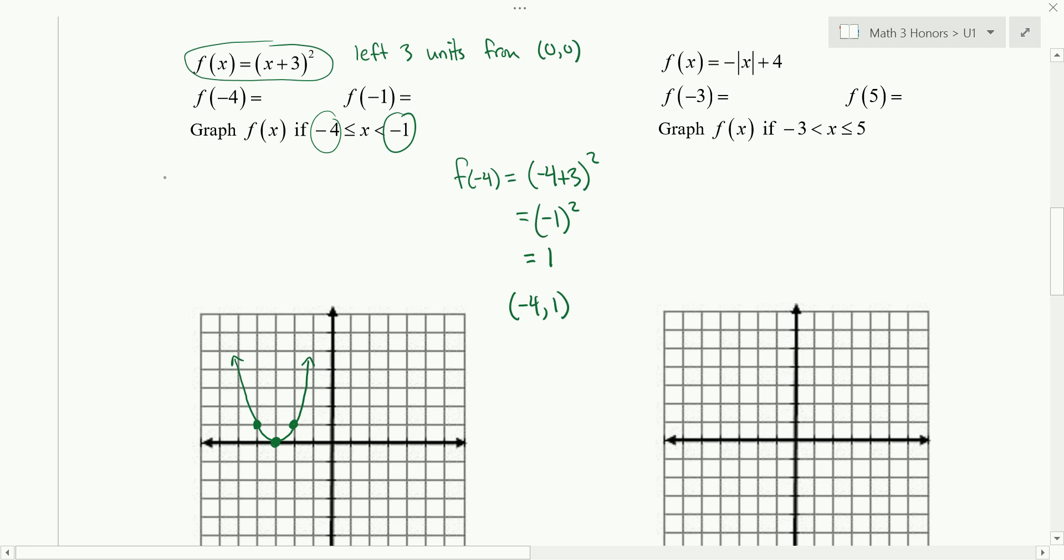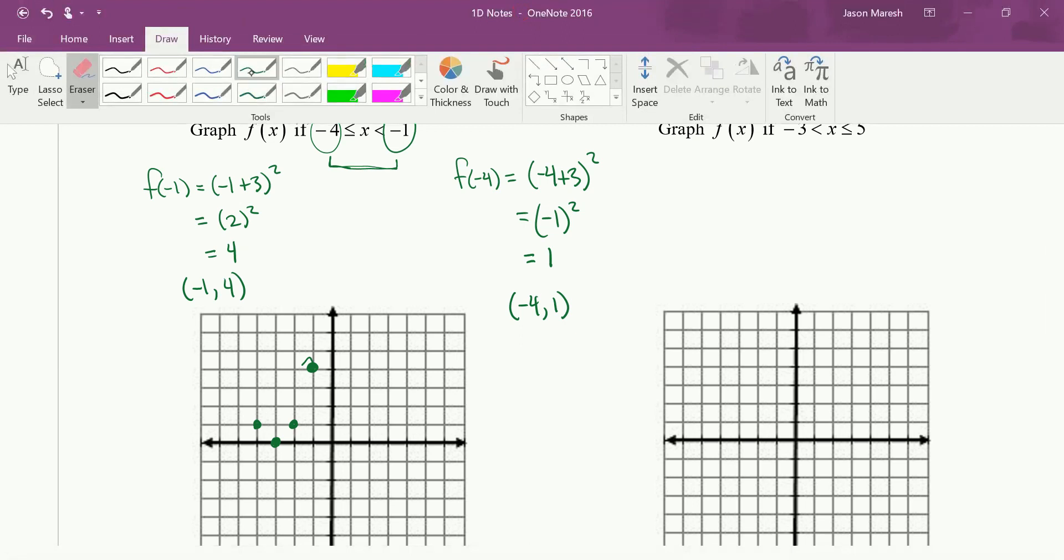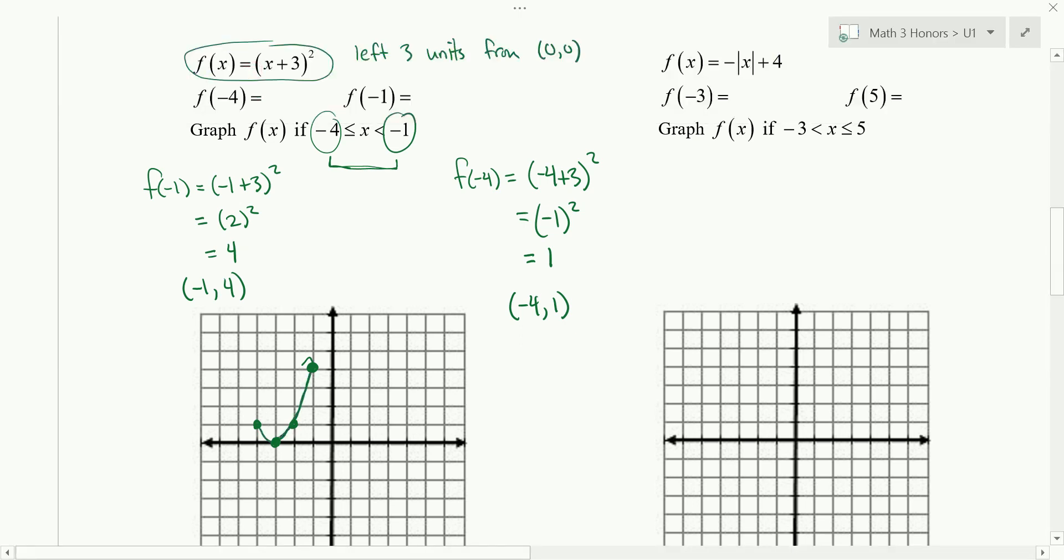So I'm going to plug in negative one as well. And I end up with four. So negative one comma four, so right there. So I got close to it. And this is saying your graph should only exist between those two x values. So now I get out my eraser, and I'm just going to graph it right here.